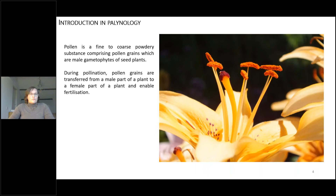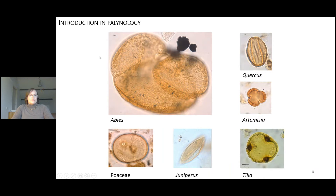We will start with an introduction to palynology. What is pollen? Pollen is a fine to coarse powdery substance comprising pollen grains, which are the male gametophytes of seed plants. During pollination, pollen grains are transferred from the male part of plants to the female part for fertilization. Importantly for us is morphology — pollen grains look completely different if they belong to different plants like oak, fir, juniper, or lime tree. By morphology we can identify genera, sometimes even species, and in most cases a family.